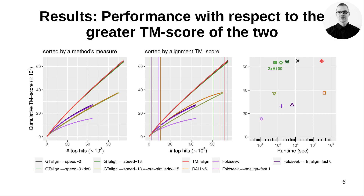These plots show the results with respect to the greater TM-Score of the two calculated for each alignment. The left panel shows results obtained by sorting alignments by the method's measure. The middle panel shows results obtained by sorting alignments by TM-Score calculated for each alignment. Comparing the left with the middle panel shows the accuracy of methods' measures. The vertical lines correspond to the number of top-scoring alignments for which TM-Score is greater than 0.5, and represent sensitivity. Please note that although GT-Align and TM-Align demonstrate the best performance, the benchmark is not tailored to TM-Align. TM-Align used to evaluate alignments does not perform global superposition search.